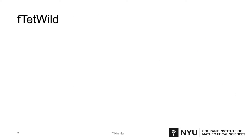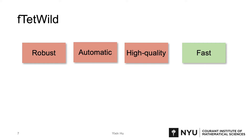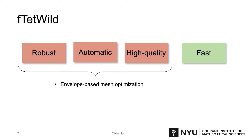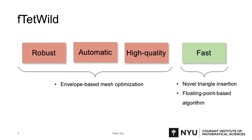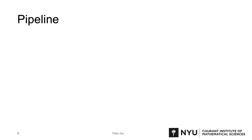So we proposed a new method, fTetWild, which is not only robust, automatic, and able to produce high-quality output, but also fast. The first three features are achieved by using envelope-based mesh optimization. The efficiency is achieved by novel triangle insertion along with floating-point construction. Now let's take a look at the pipeline of our method.